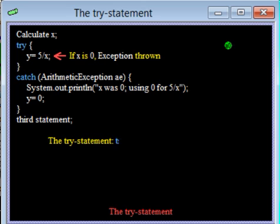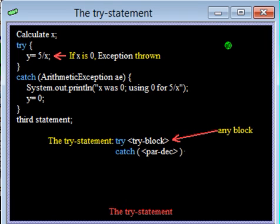The TRY statement consists of keyword TRY, followed by a block called the TRY block, followed by a catch clause, which consists of keyword catch, the declaration of a parameter, and a block called the catch block.